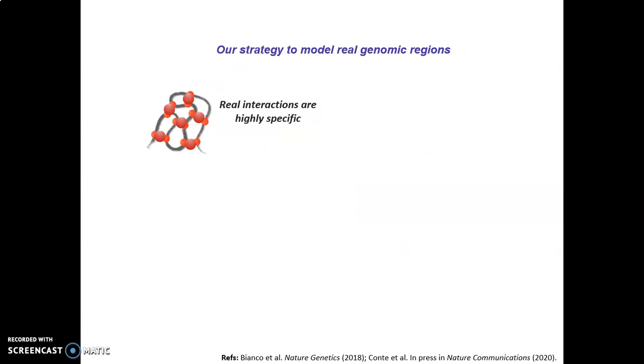This is my last slide, and here I want to show you a complication of the model to simulate real genomic regions. Indeed, in real chromosomes, the attractive interactions between binders and polymer sites are highly specific interactions. In other words, there are different types of binders that mediate different specific interactions. So, to take into account this specificity, we visually represent the different types of binders by using different colors, and we allow an attractive interaction only between polymer sites and binders of the same color. For instance, the green binders only interact with the green sites of the polymer chain, and so on.